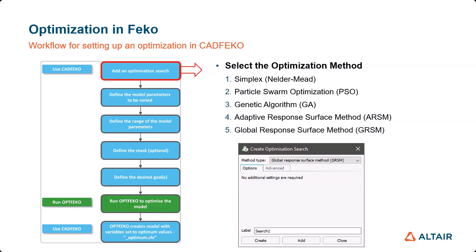The first step is to add an optimization search and select the optimization method. FICO provides many useful optimization methods such as simplex, particle swarm optimization, genetic algorithm, adaptive response surface method (ARSM), and global response surface method (GRSM).